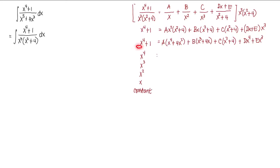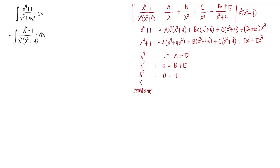For x⁴, the coefficient on the left is 1, and on the right we have a + d. For x³, there is no x³ on the left, so we write 0 = b + e. For x², there is no x² on the left, but on the right side we have 4a + c. For x, there is no x on the left, so 0 = 4b. For the constant, on the left we have 1, and on the right we have 4c.